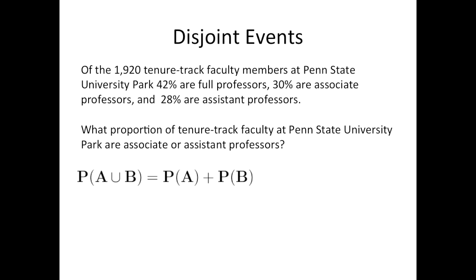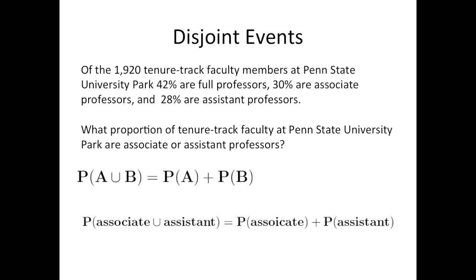We can use the first addition rule formula: the probability of A or B equals the probability of A plus the probability of B. In this case, the probability of being an associate or an assistant professor is equal to the probability of being an associate professor plus the probability of being an assistant professor, or 0.30 plus 0.28, which equals 0.58. So 58% are associate or assistant professors.